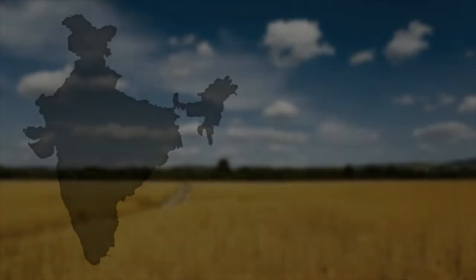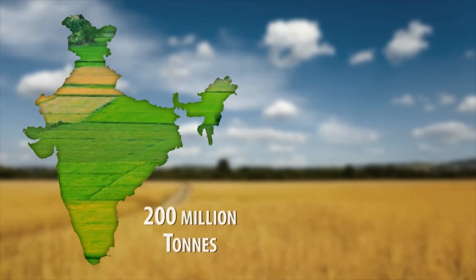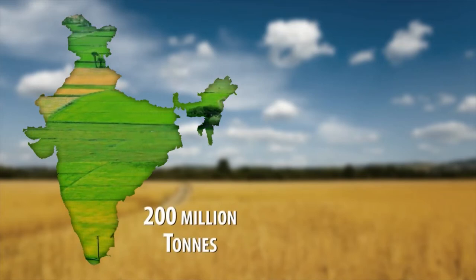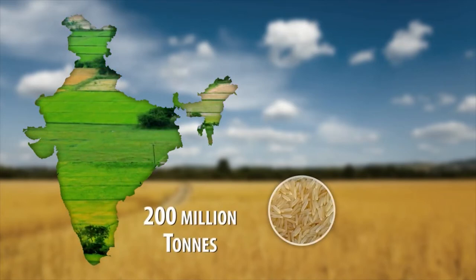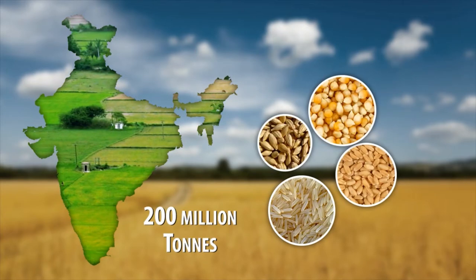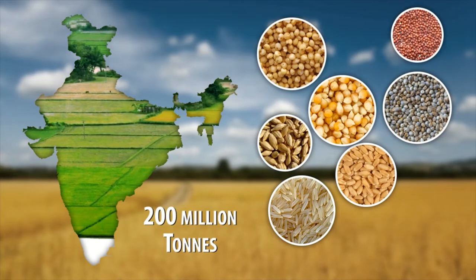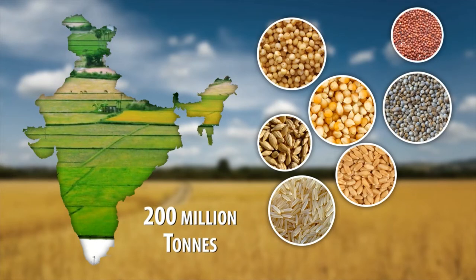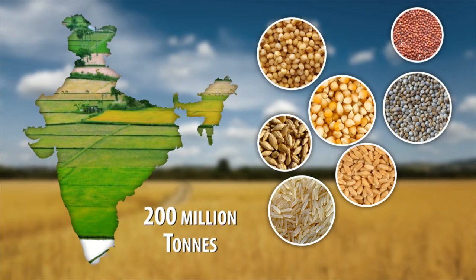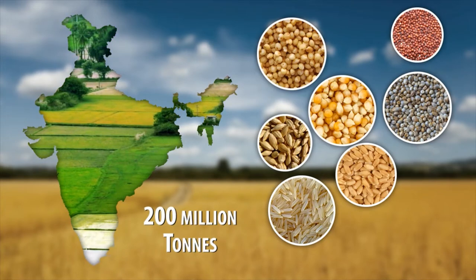Overview of the Food Grain Milling Sub-Sector. Every year India produces more than 200 million tons of different food grains like rice, wheat, maize, barley and millets like jawar, bajra and ragi. The food grain milling process differs according to the raw material used and the finished product.